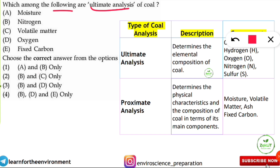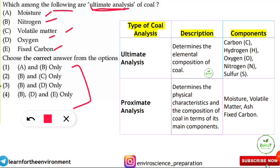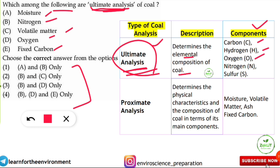The question reads: which among the following are part of the ultimate analysis of coal? The options are moisture, nitrogen, volatile matter, oxygen, and fixed carbon. Ultimate analysis determines the elemental composition of coal. The elements it analyzes are: carbon, hydrogen, oxygen, nitrogen, and sulfur. These are the elements determined through the ultimate analysis of coal.